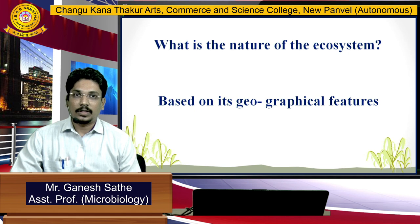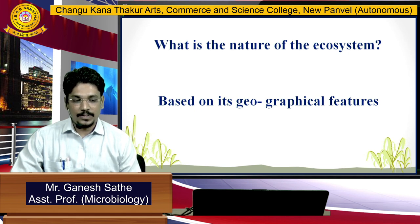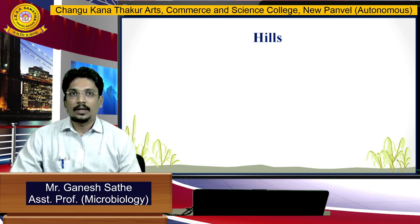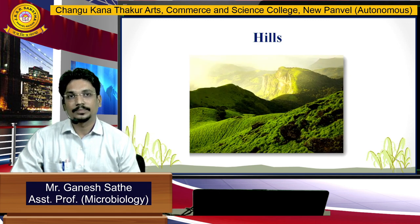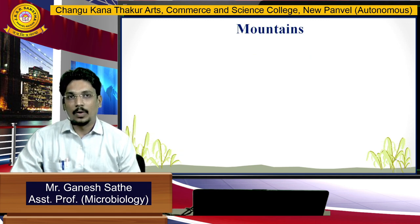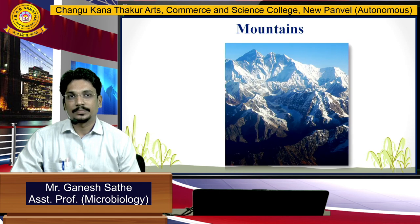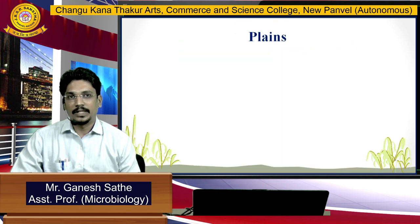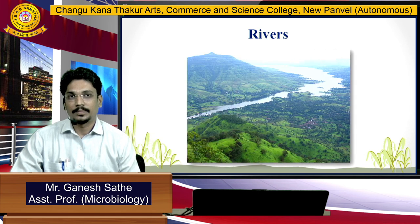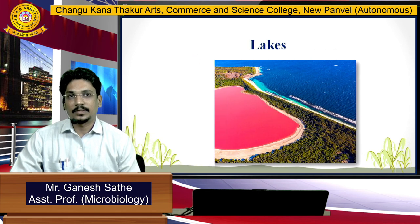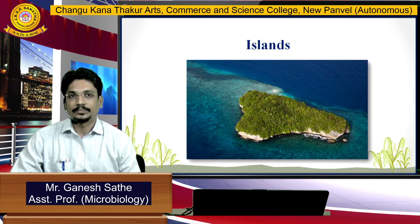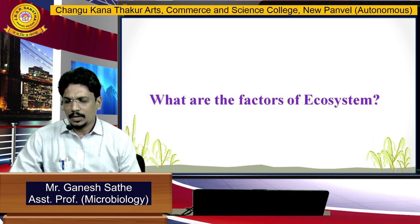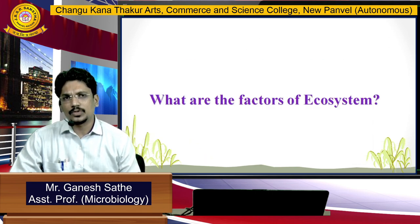The nature of ecosystem is based on its geographical features. The geographical features include hills, mountains, plains, rivers, lakes, and islands. Now, what are the factors of this ecosystem?